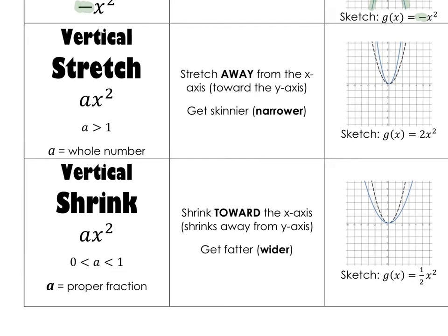The other two vertical transformations are vertical stretches and vertical shrinks. Now these are a little bit confusing because the letter that we're going to change, it is outside, but it's in the same location for both vertical stretches and vertical shrinks. The thing that makes it be different is the type of number you are multiplying by. If that a value is a whole number, like 5 or 10 or 15, it's going to get narrower. Like here, we multiplied by 2. That's a whole number. So this graph got narrower than the parent function. You see how it's like inside of it? That's narrower, skinnier.